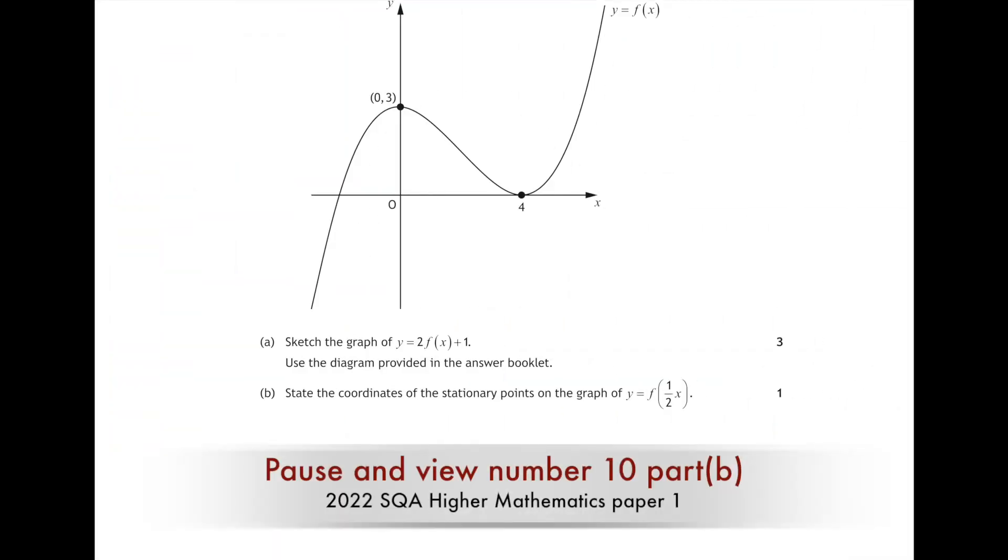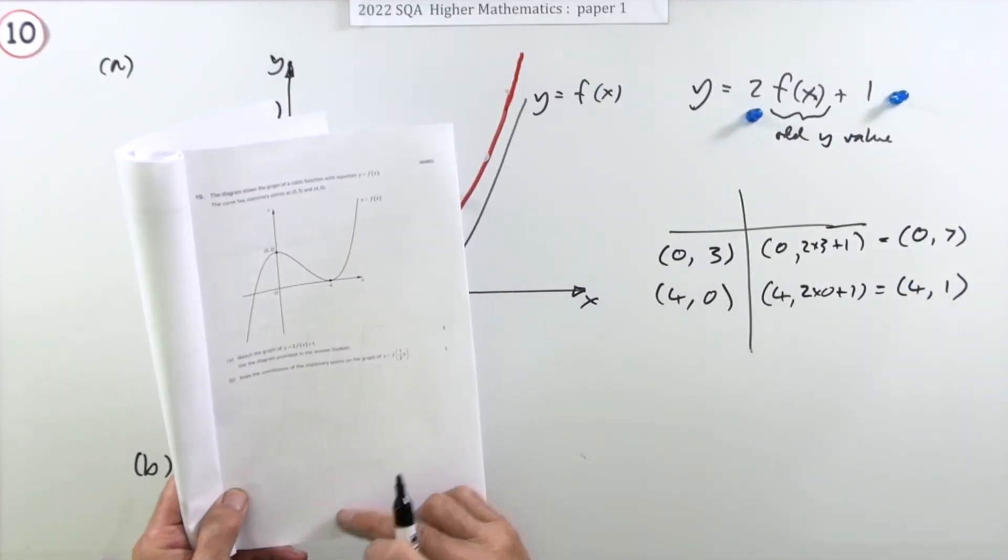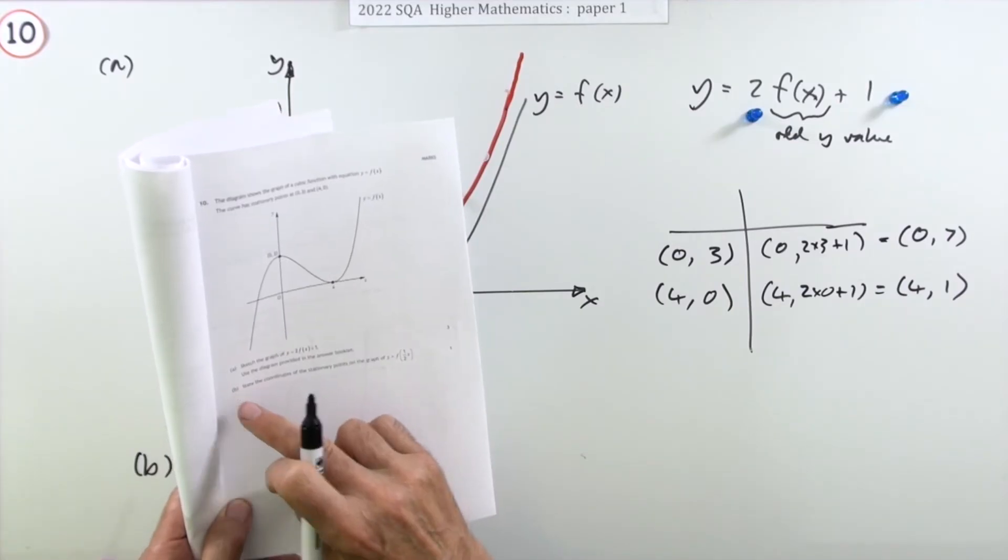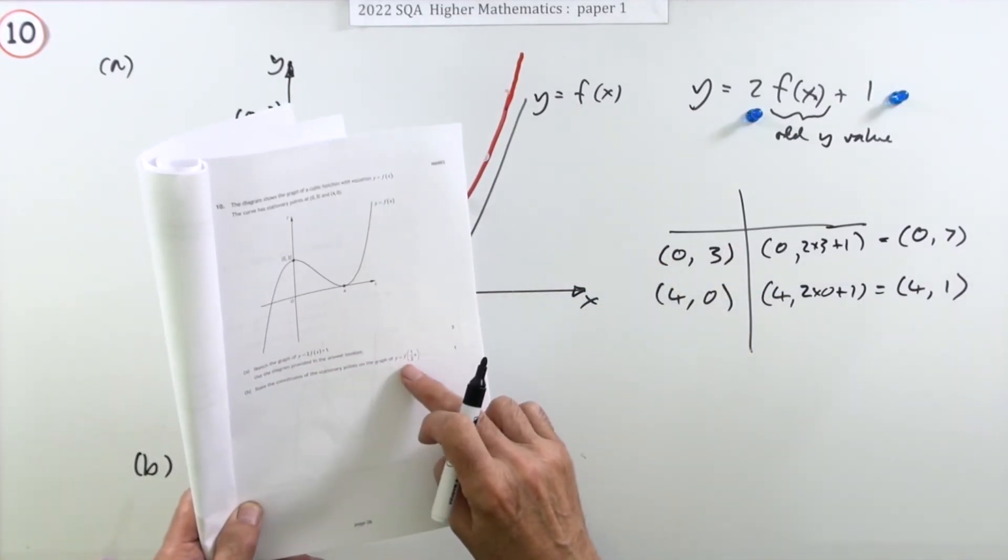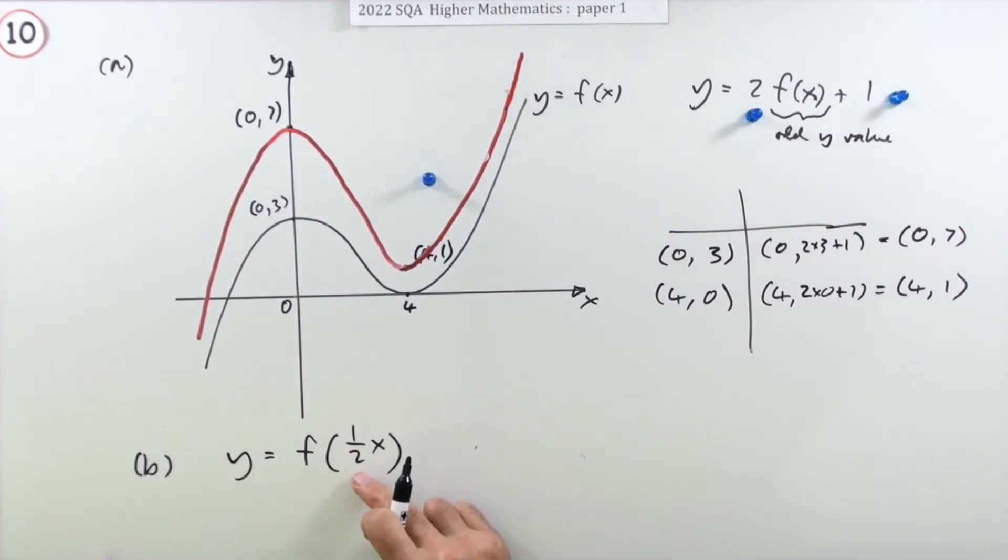Now in part b, just for the one mark, it just says state, so you don't have to draw it. State the coordinates of the stationary points in the graph of y equals f of a half x. Now this time there's no change to the y coordinates but there is a change to where you find them.